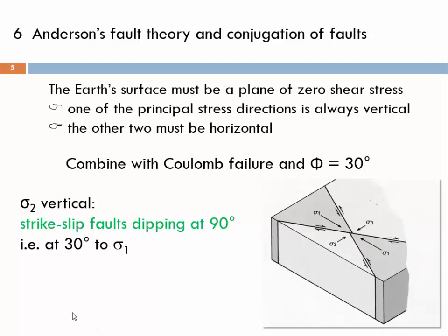It is also the case when we place sigma 2 vertical. A vertical sigma 2 would cause strike-slip faults dipping at 90 degrees, and again we would observe a 30 degree angle between sigma 1 and either of these conjugated faults. The intersection line of the conjugated faults would be sigma 2 — it is not shown here, but it is vertical.